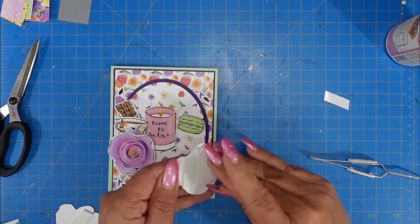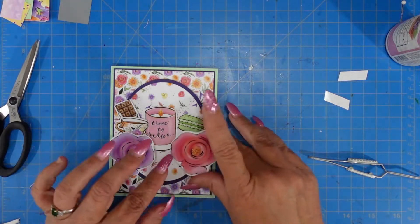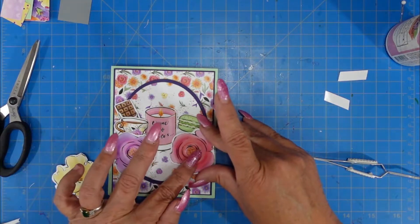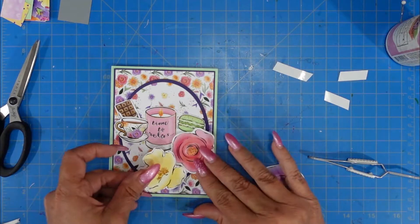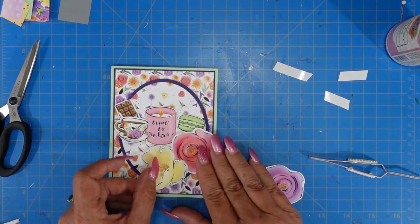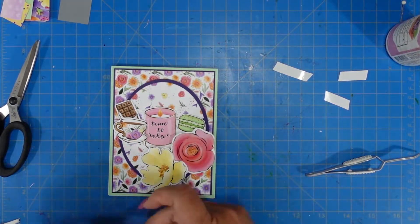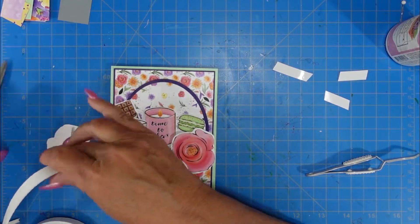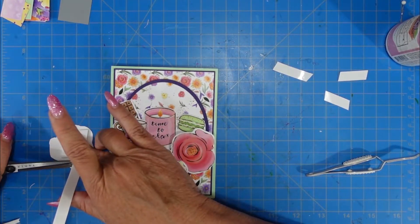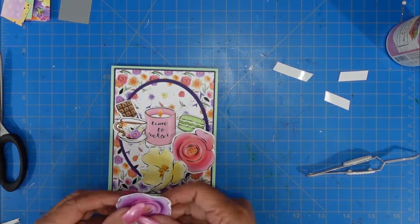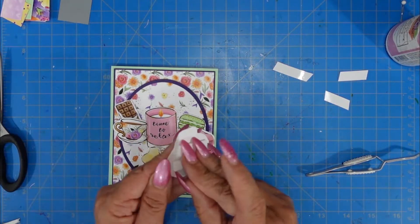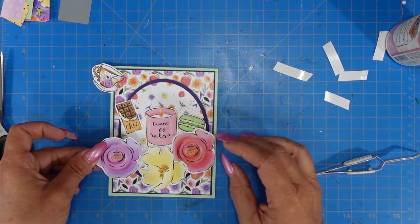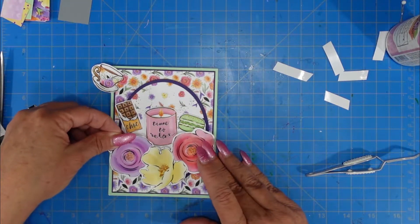So once I get the foam tape on, I'm going to start adhering these. I do try to keep things in odd numbers. So you'll notice that I have three florals, but I have four of the other elements over at the top. That makes a total of seven, which is still going to be an odd number. I don't always do it this way, but I would say 99% of the time. I do try to balance things out by using odd numbers.